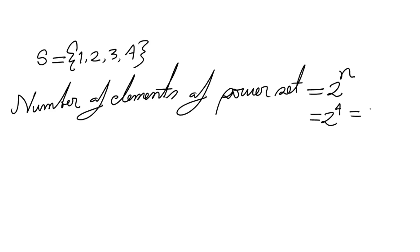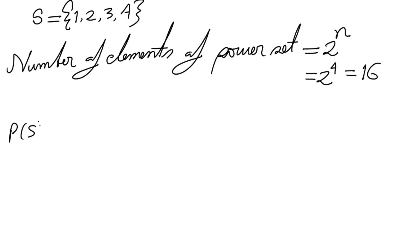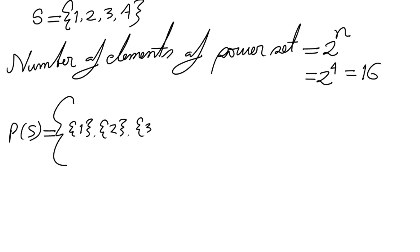Here we have four elements — 1, 2, 3, and 4 — therefore the number of elements will be 2 to the power 4, which equals 16. Let's find the power set of S. First, write the subsets with single elements: {1}, {2}, {3}, and {4}.